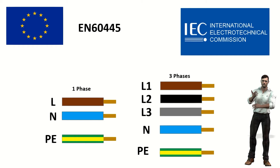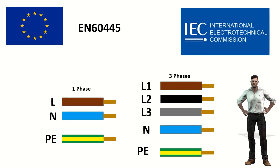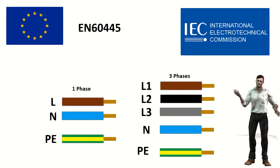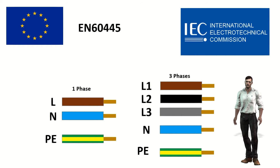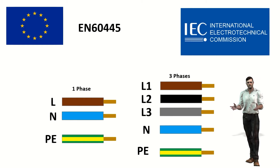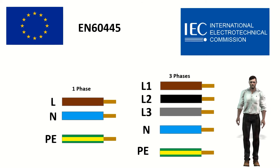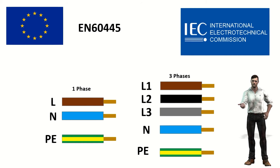In Europe, a large majority of countries apply the EN 60445 standard. For single-phase AC voltage installations, brown is normally used for the phase conductor (L), and light blue for the neutral (N). For the earth or protective conductor (PE), green with a yellow line is used. For a three-phase installation: brown for phase 1 (L1), black for phase 2 (L2), gray for phase 3 (L3), light blue for the neutral (N), and green with a yellow line for the ground or protective conductor (PE).